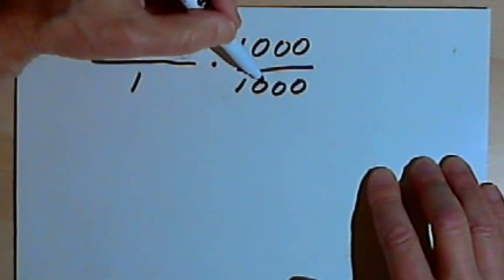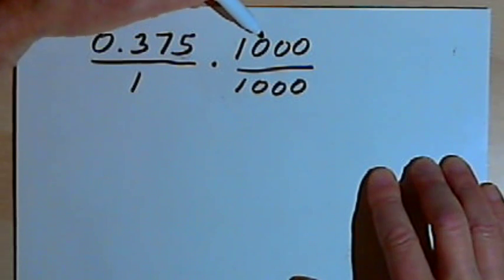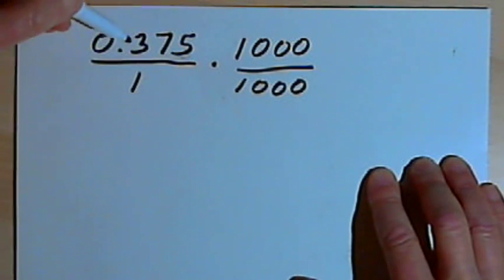Multiplying by 1,000 over 1,000, like multiplying by any number over itself, is the same as multiplying by 1. So I'm not going to change the value of my original decimal. I'm just going to change what it looks like.